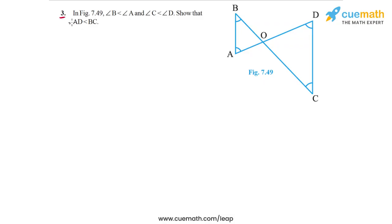In question 3 of this exercise, the problem statement says in figure 7.49: angle B is less than angle A, and angle C is less than angle D. We have to show that AD is less than BC — that is, the segment joining A to D is less than the segment joining B to C.